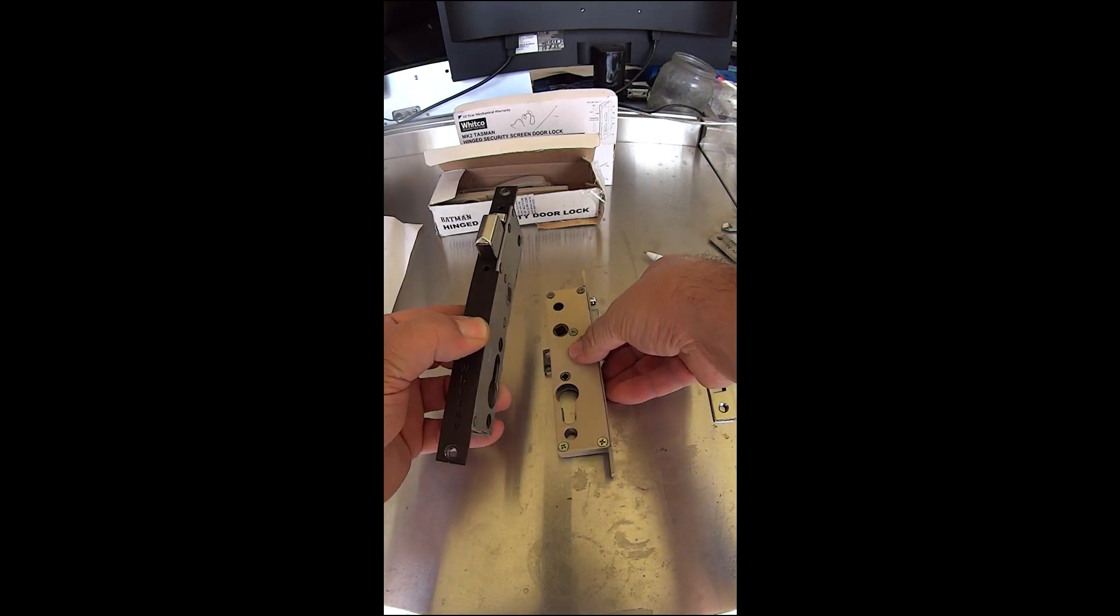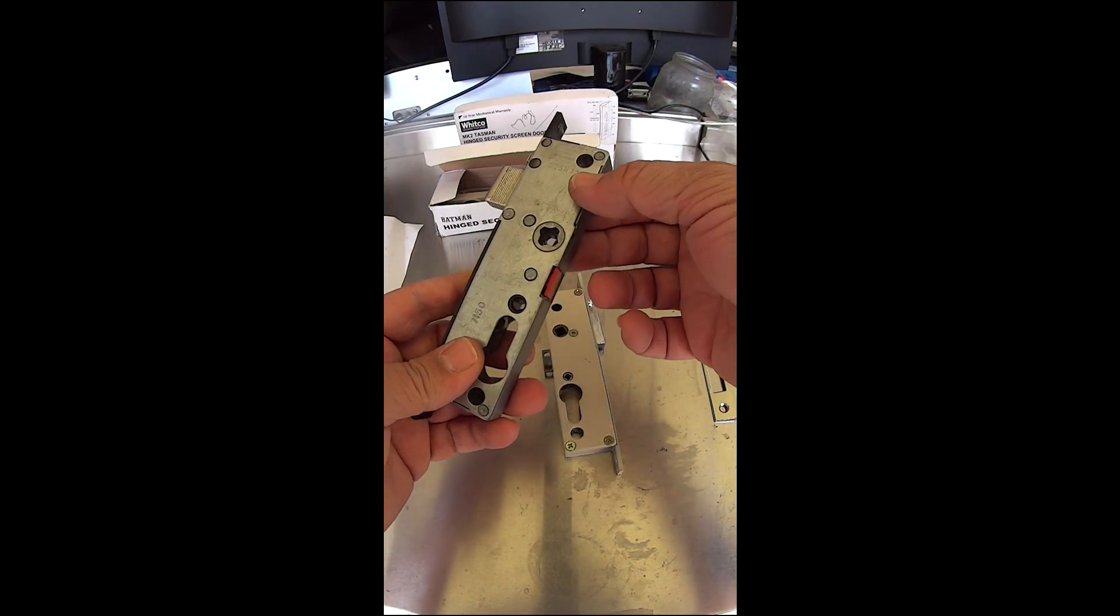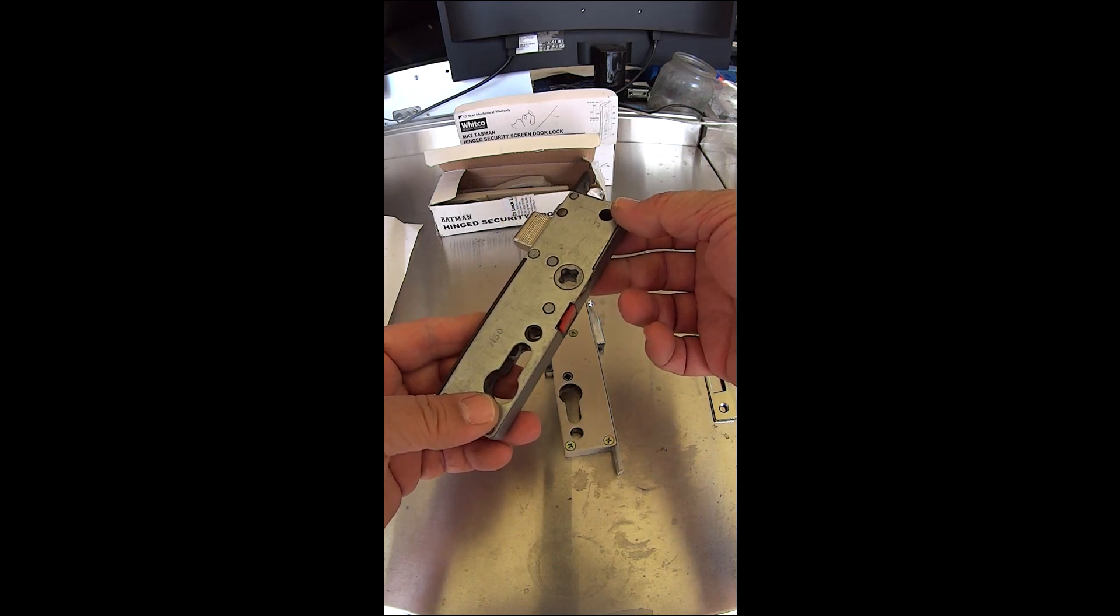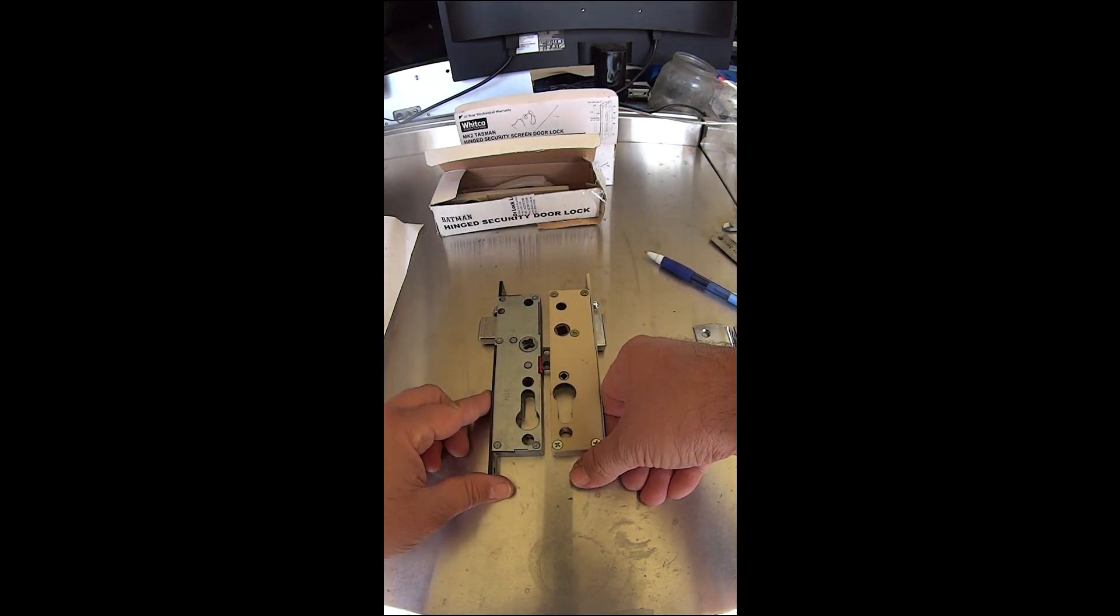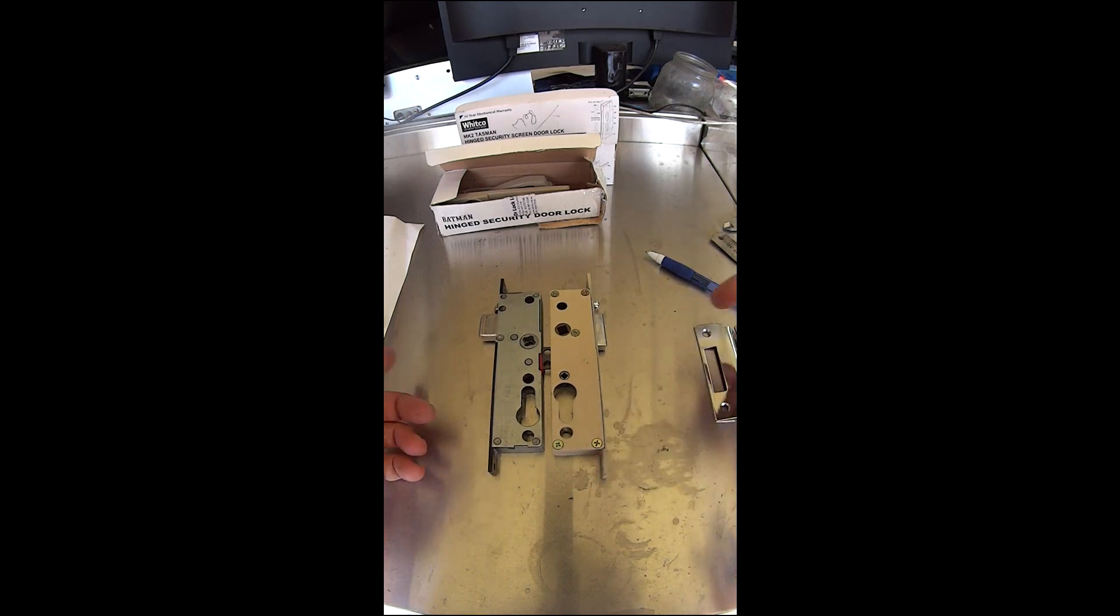If you're only replacing it in a single locking then you don't have to worry about the three-point locking and you can use a standard Witko Tasman lock like this Mark 1 or Mark 2. As you can see they're quite a close replacement, there's not much really in between them.